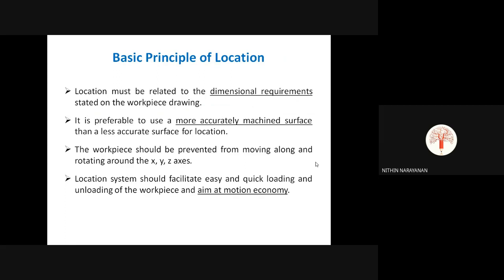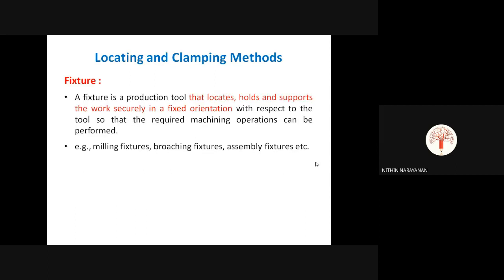There are many advantages of using jigs and fixtures: improved productivity, rapid production work — completing work in minimum time, reduced manufacturing cost, and the ability to produce a large number of identical and interchangeable parts. There will also be a large reduction in operator skill required, complex-shaped or heavy components can be easily machined, and machining accuracy can be improved.